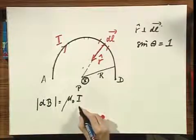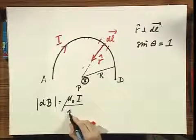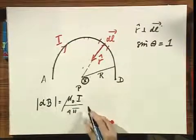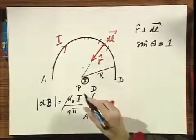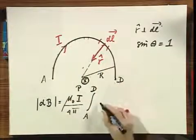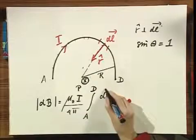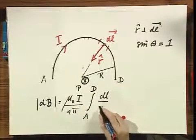All right, so I can delete the cross and I can write down now what the magnitude of the B is, which is μ₀ times I divided by 4π, and I do now a very dirty integral from A to D along this arc of dL divided by r squared.